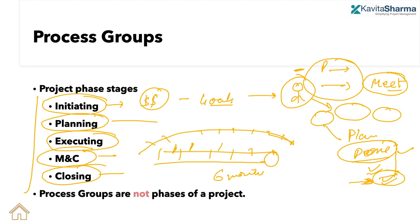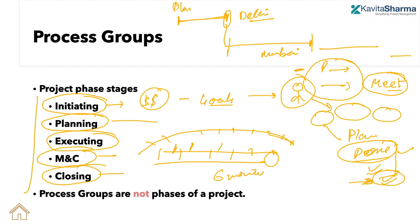Understand that process groups are not phases of the project. For example, if I want to roll out 5G to various parts of India, I may do a trial phase in Delhi first, then Mumbai, and so on — those are phases. Each phase is planned, executed, monitored and controlled, and closed. So initiating is not a phase; within a phase you could have initiating, planning, executing, and monitoring and controlling all happening.